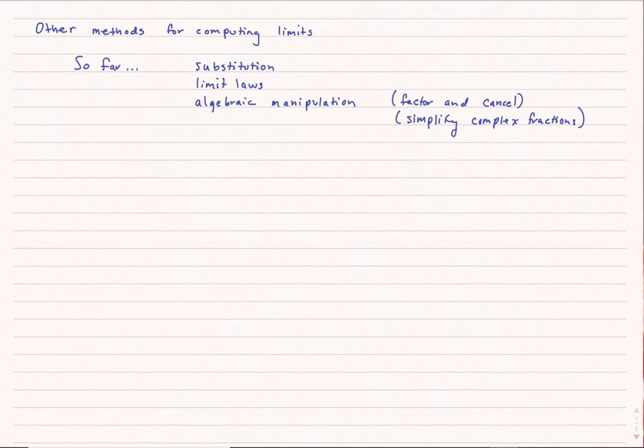We're going to need some other methods for computing some limits. So far what we've done is substitution, we've used limit laws, and you should also be able to do some algebraic manipulation. That is, you can sometimes factor and cancel terms so that the denominator doesn't go to zero. Sometimes you can also simplify complex fractions. But there are cases where these methods aren't going to work.